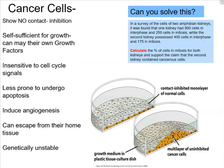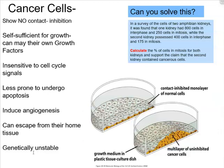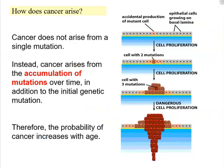Cancer cells are insensitive to cell cycle signals and less prone to undergo apoptosis. They have the ability to induce angiogenesis — the formation of new blood vessels — so that cells in the center of the tumor can access oxygen and nutrients. They make their own blood vessels to tap into major blood vessel highways. They also have the ability to metastasize, escaping their home tissue, especially malignant cancers. Generally, they are very genetically unstable and continue to accumulate mutations.